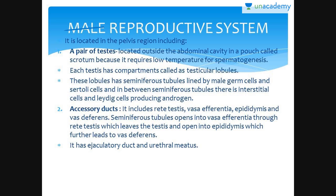The male reproductive system is located in the pelvic region. It includes a pair of testis, accessory ducts, external genitalia, and accessory glands.